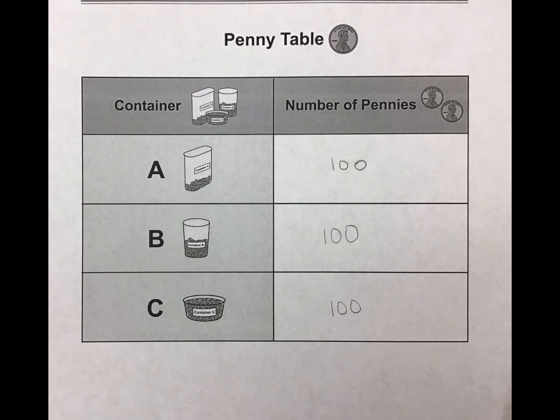Today is step four: organizing our data. On our penny table, we noticed that container A had 100 pennies, container B had 100 pennies, and container C had 100 pennies.